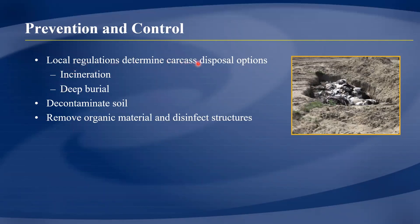Local regulations on carcass disposal should be followed. Animals should be incinerated — they are burned and then deep-buried, and the surrounding soil is decontaminated, with lime sometimes used in the area. Since spores can survive in the environment for decades, proper disposal ensures the spores do not persist and cause future infections.